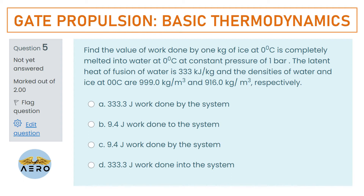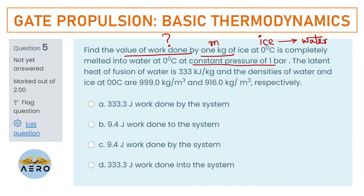From the given values we have to find whether the work is done by the system or to the system. The work done formula is W = P(V₂ − V₁). The process is ice converting to water at constant pressure; P₁ = P₂ = 1 bar = 10⁵ Pa.